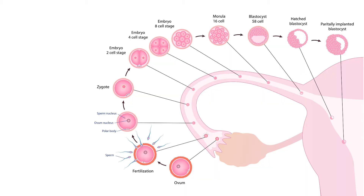After the fallopian tube, the embryo comes to the uterus. The lining of the uterus, which we call the endometrium, is where it will be implanted. So now we will know: what is a blastocyst?